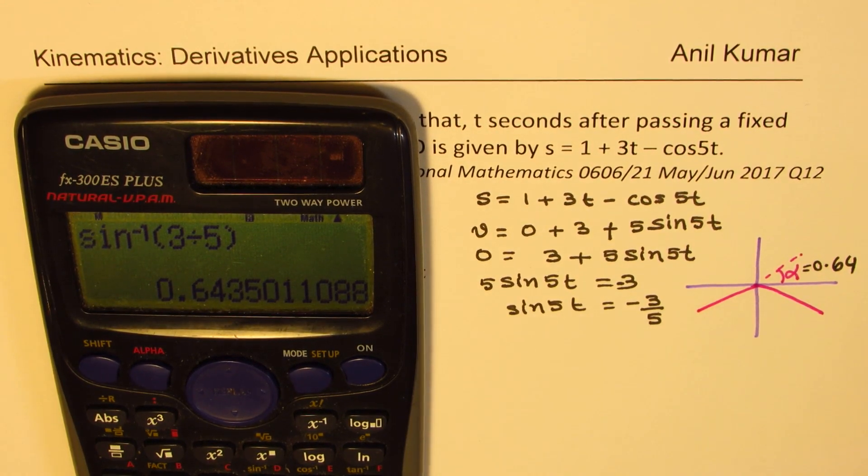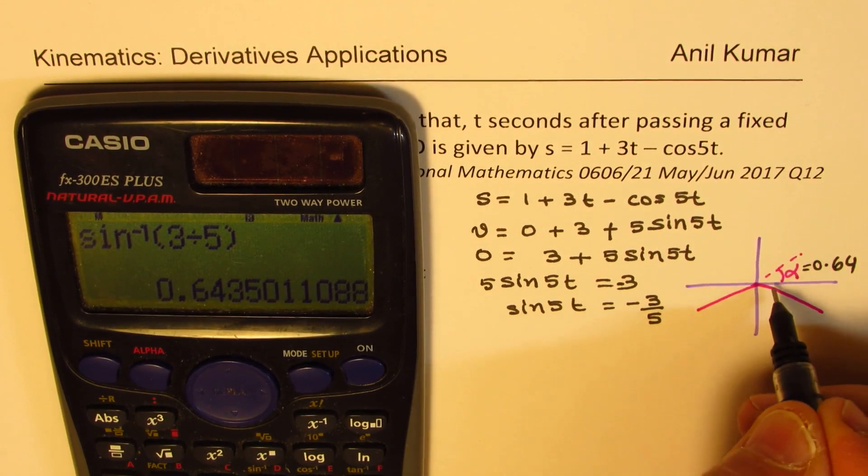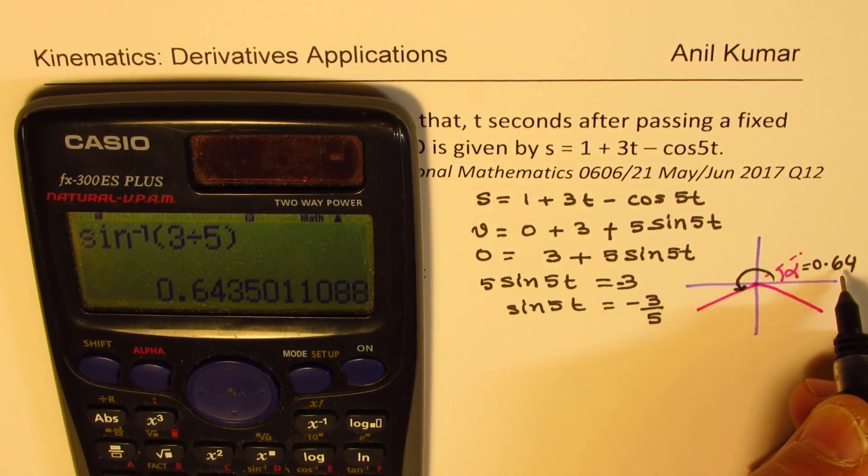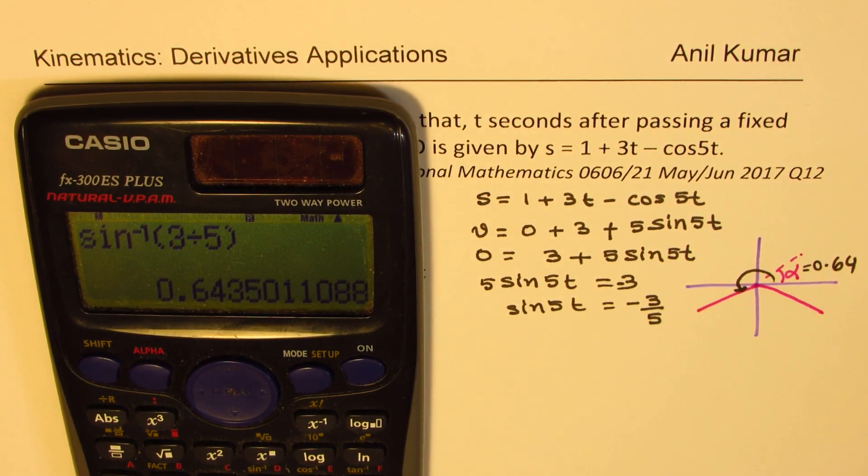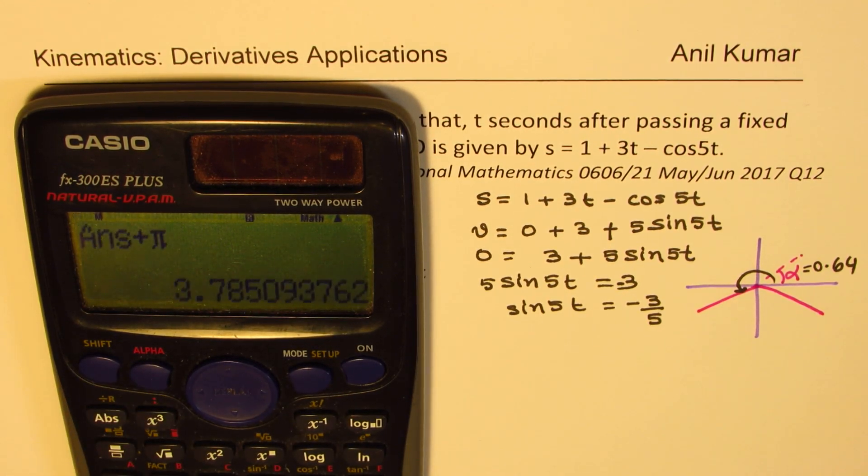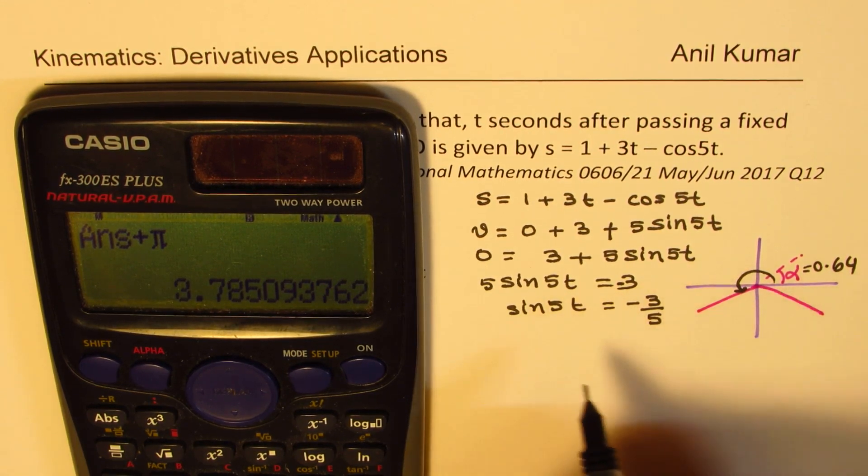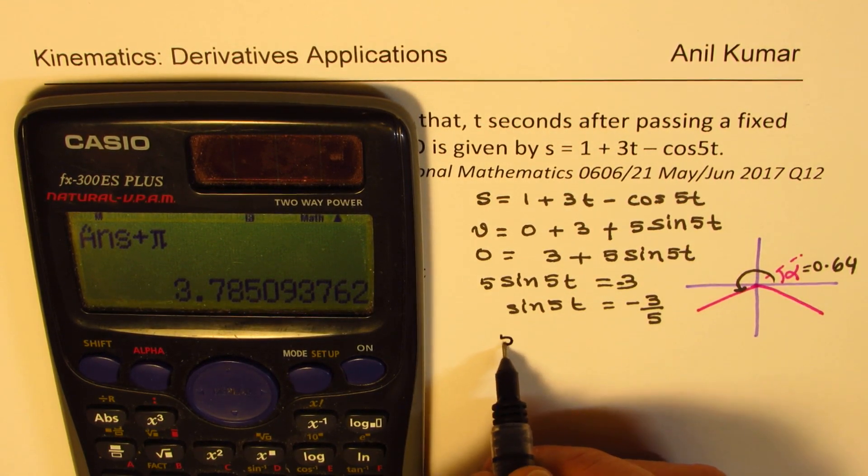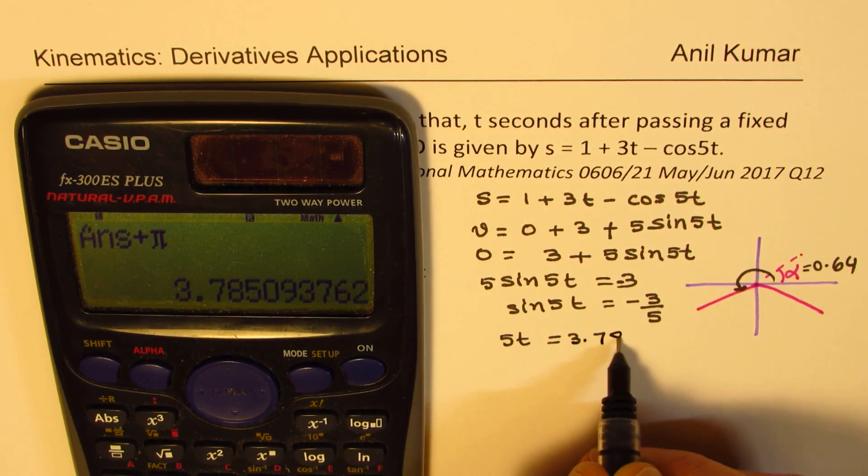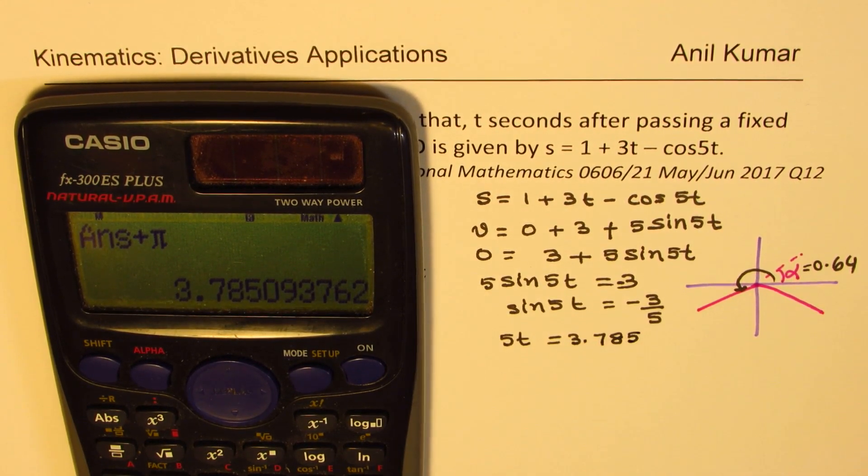It gives us a value of alpha equals 0.64. Let's take two decimal places. So what are these angles? This angle will be π plus 0.64, so we'll add to this π, which gives us the value of, so we get one value which is 5t equals 3.785. This is one value.